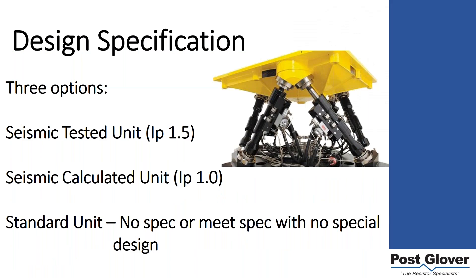When specifying neutral grounding resistors, you have three options: a seismic-tested unit (shaker table testing that mimics a three-dimensional earthquake), a seismic-calculated unit, or if your location's seismic requirements are low enough, a standard unit that still meets the applicable standard. The goal today is to help you figure out which camp you fall into.